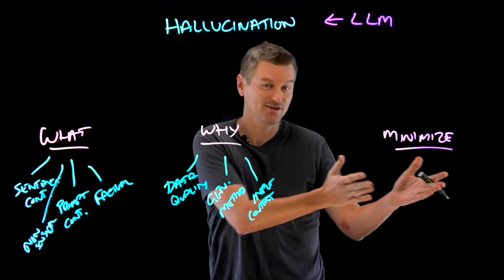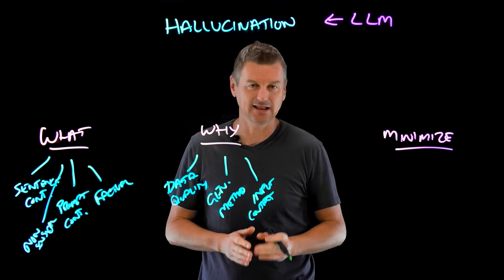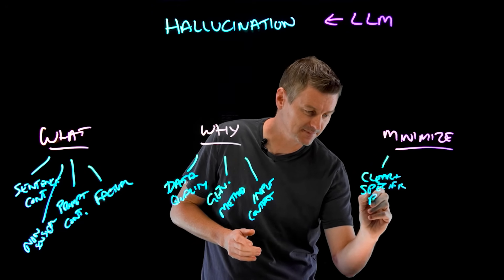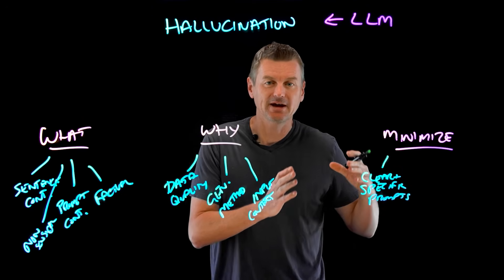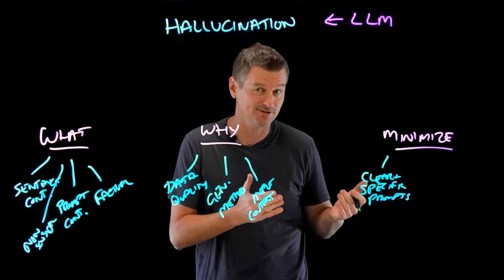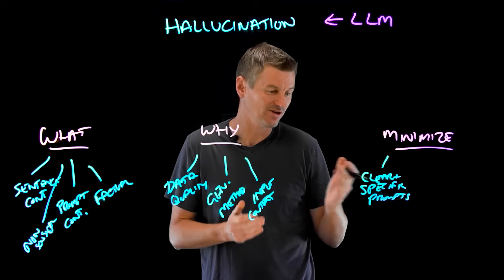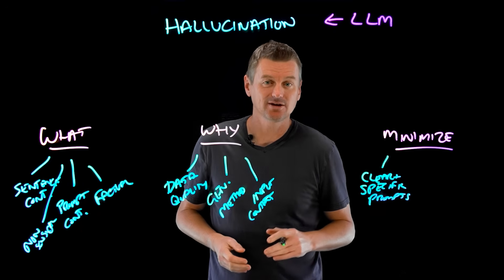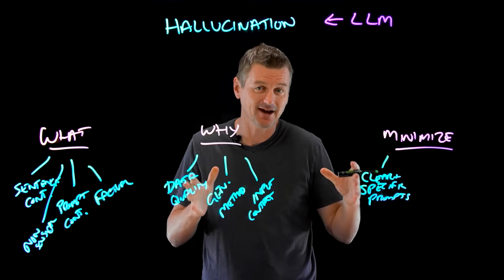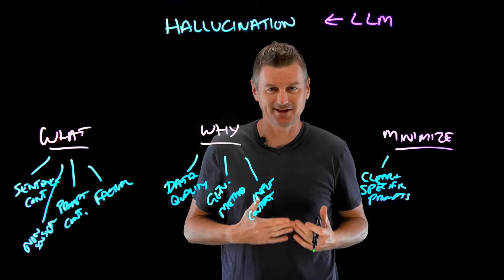Which brings us to the third and final part: what can we do to reduce hallucinations in our own conversations with LLMs? One thing we can certainly do is provide clear and specific prompts. The more precise and detailed the input prompt, the more likely the LLM will generate relevant and, most importantly, accurate outputs. So, for example, instead of asking 'What happened in World War II?' — which is not very clear or specific — we could say 'Can you summarize the major events of World War II, including the key countries involved and the primary causes of the conflict?' That gives the model a better understanding of what information is expected in the response.